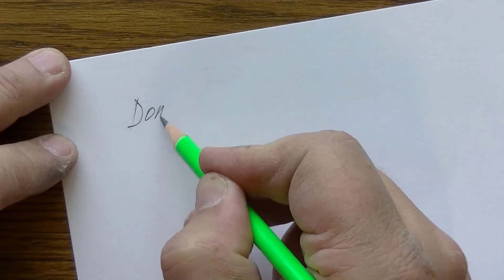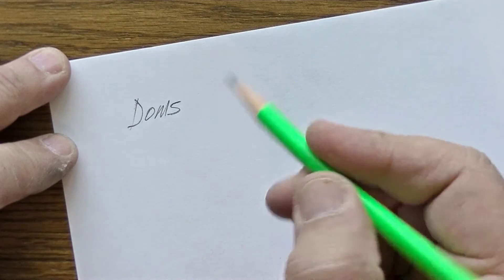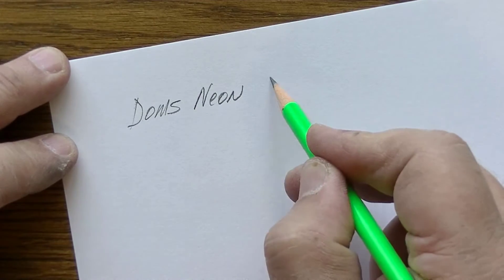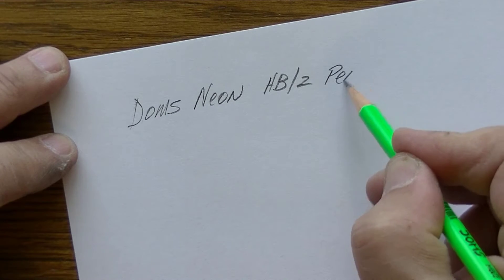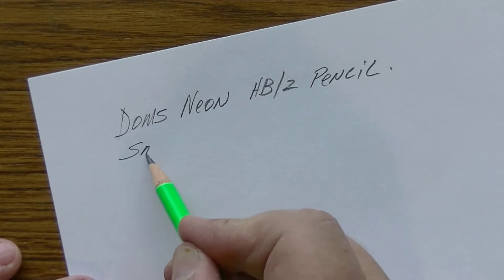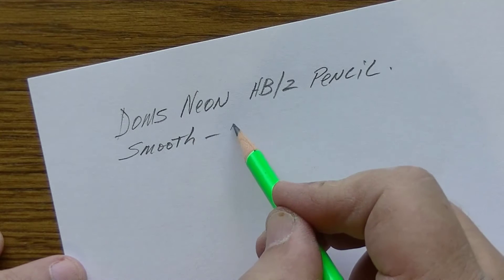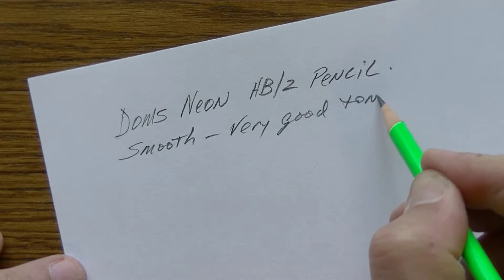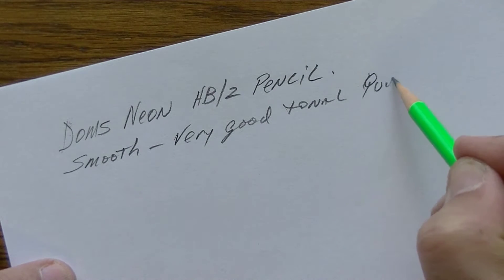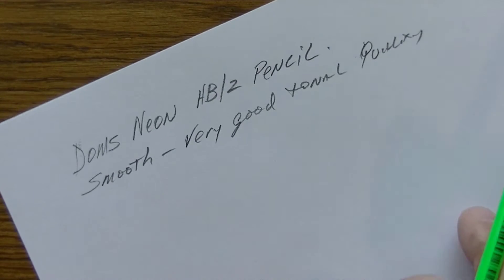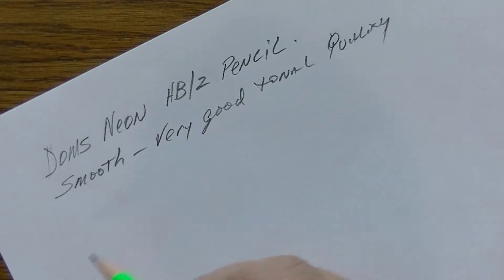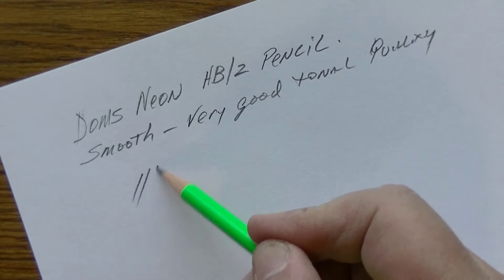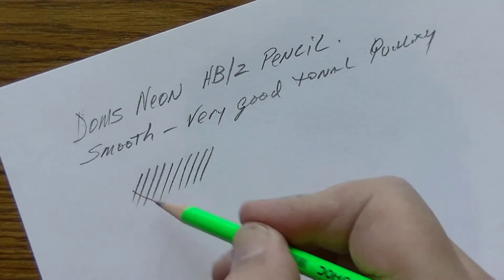Let's get an impression of what this feels like to write with. This Dom's Neon. Okay, this is the Dom's Neon, it's an HB number two pencil. First impressions, well it writes smooth. Okay, it has very good tonal quality. It's like the darkness, you can probably see it pretty well here. Now I'm writing kind of sloppy and fast here just because I just want to get a feel for this. Yes, it does go on very smooth. It's a very soft graphite.